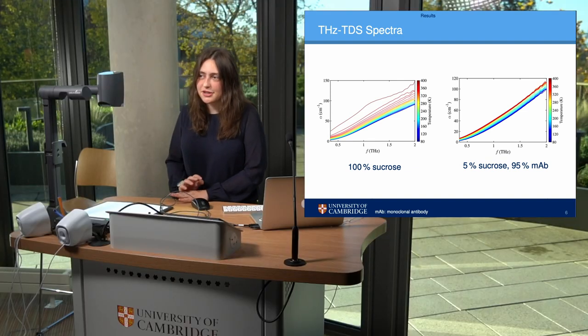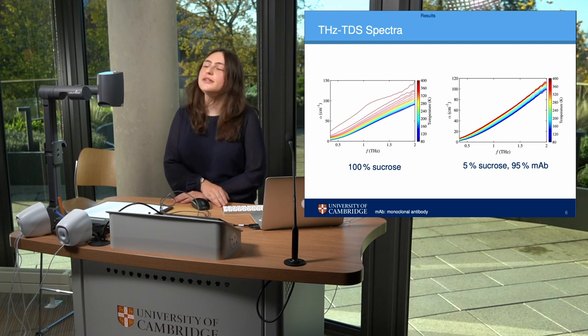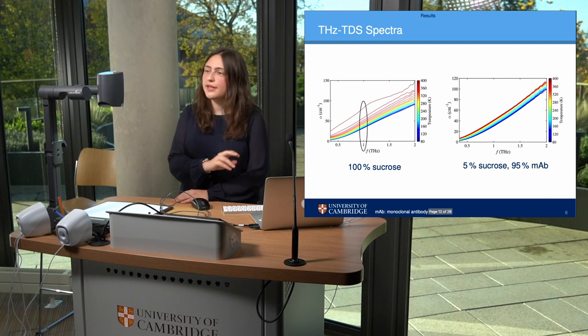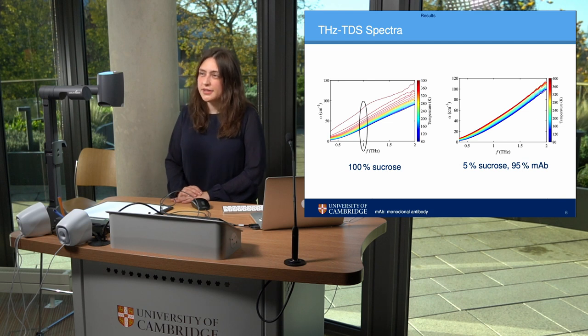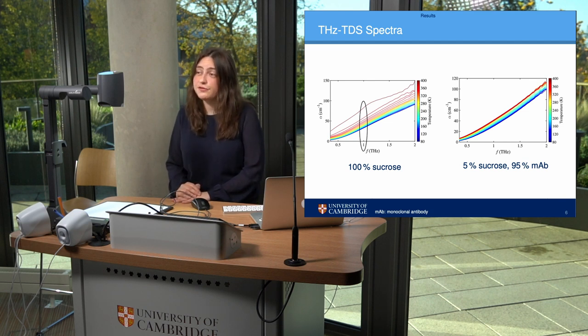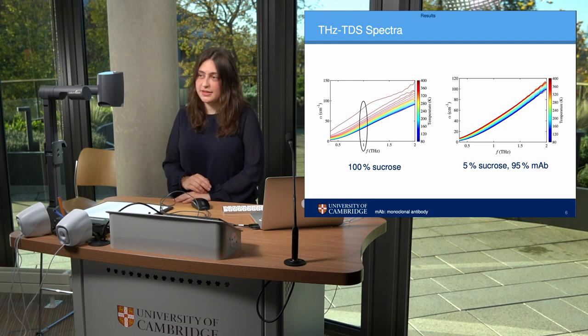The way we extract more information is by looking at only one frequency — for example, 1 terahertz — and tracking how the absorption at that one frequency changes as we increase the temperature. That leads directly onto the next slide.